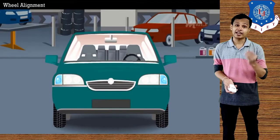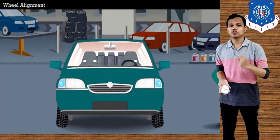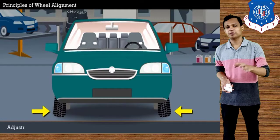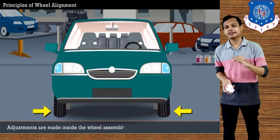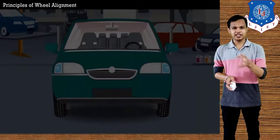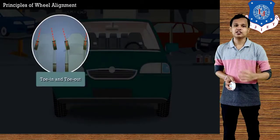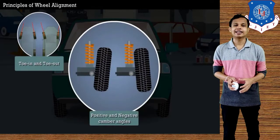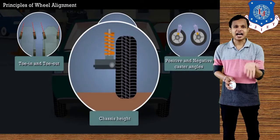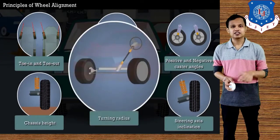When performing wheel alignment, we need to measure and adjust some angles. Adjustments are made inside the wheel assembly to ensure efficient and safe driving. The angles we measure are: first, toe-in and toe-out; second, positive and negative camber angles; third, positive and negative castor angles; fourth, chassis height, which should be proper; fifth, steering axis inclination; and last, the turning radius — the radius created during turning.